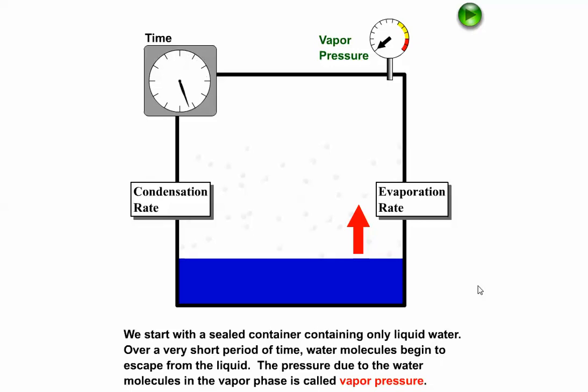So let's look at this little experiment here. It's a closed chamber. And let's pretend that at the beginning we have only liquid water present. There's no gaseous water vapor present initially. So that means our vapor pressure here, as indicated on the little gauge, is zero. That's our initial state.